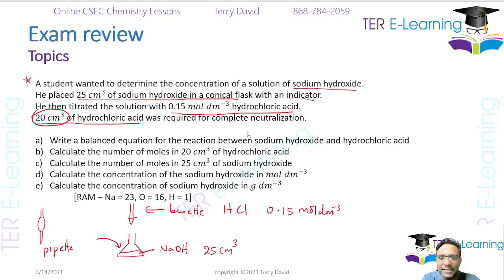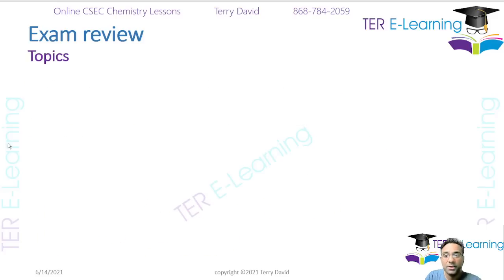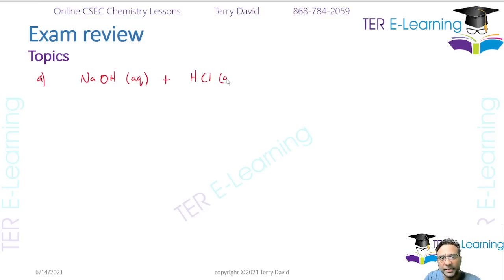They realized 20 cm³ of the hydrochloric acid is required for complete neutralization. For part A, CXC might ask you to write a balanced equation. You are reacting sodium hydroxide and hydrochloric acid — sodium hydroxide is an alkali and hydrochloric acid is an acid. So you are adding an acid and an alkali, meaning your products will be salt and water.